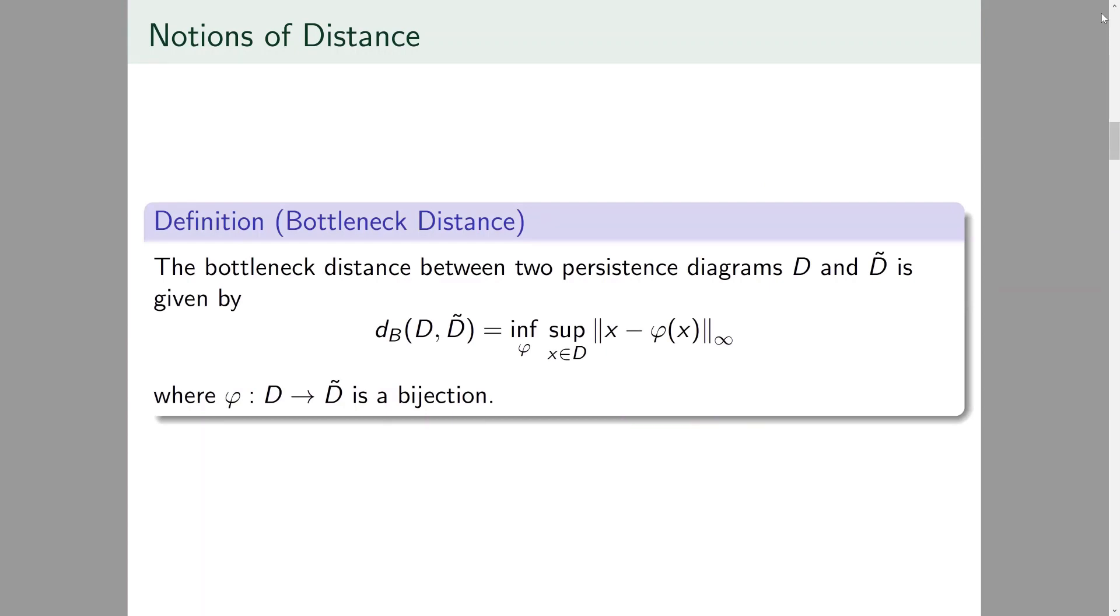There are two very common ways to measure the distance between two persistence diagrams, both of which involve taking the infimal cost of moving points from one diagram to the other, introducing the critical line y equals x if necessary.